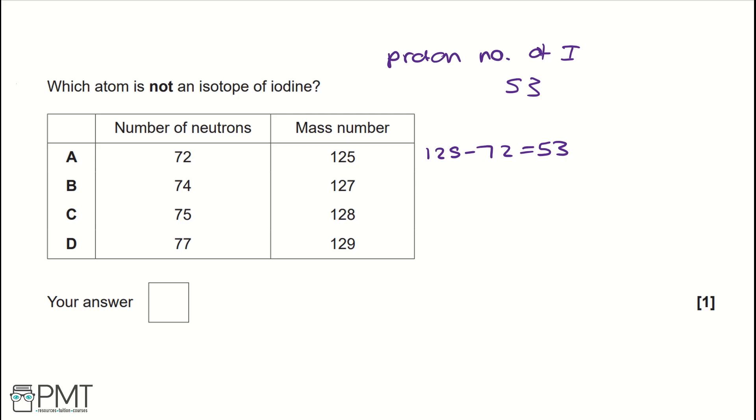It's not A because that is 53, and we want something that's not an isotope of iodine. If we continue, 127 minus 74 also gives us 53, so it's not B.